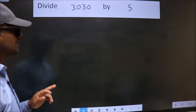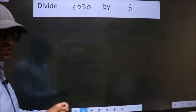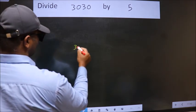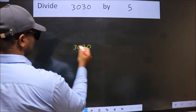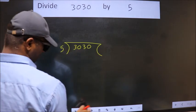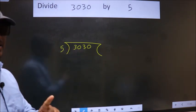Divide 3030 by 5. To do this division, we should frame it in this way. 3030 here, 5 here. This is your step 1.